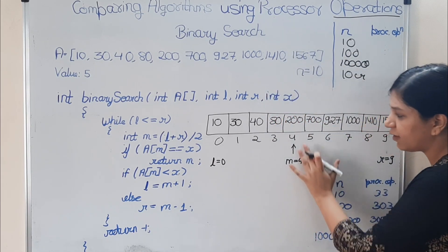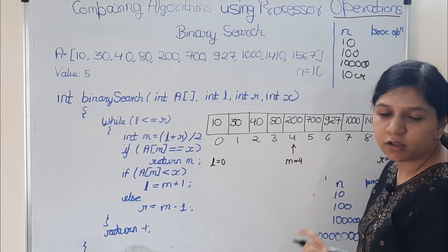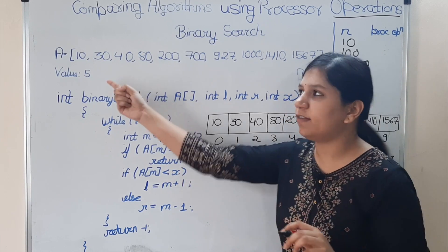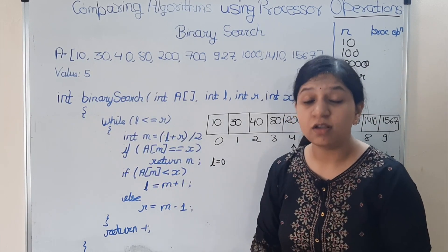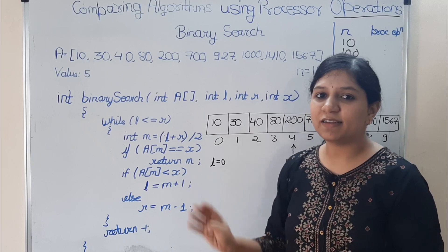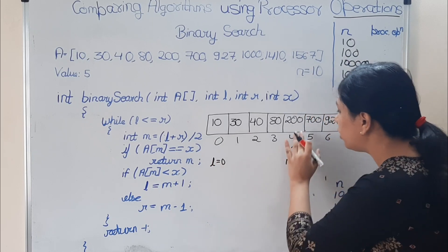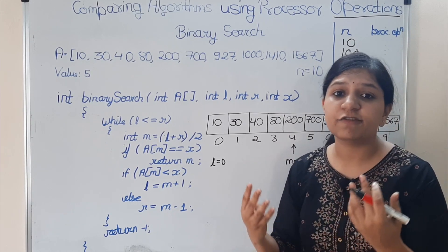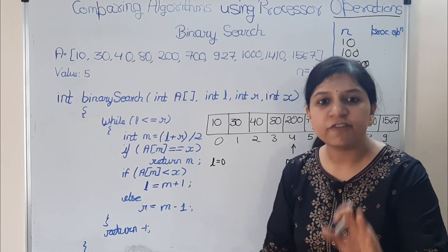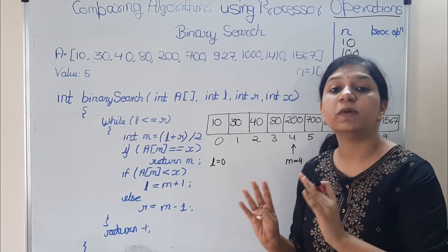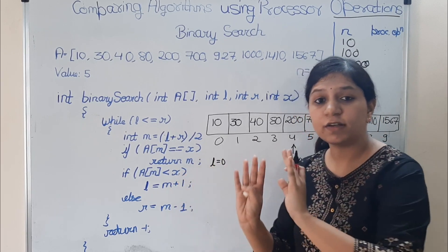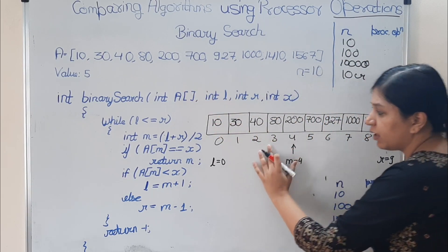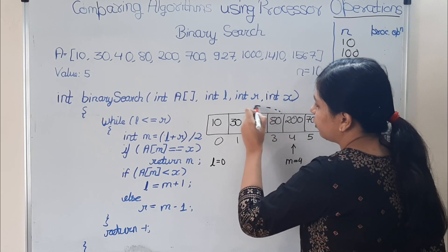We check what element is at index 4 — it is 200. We ask: is a[m] equal to x? x is 5, so they are not equal. Since this is a sorted array, all elements after 200 are greater than 200 and therefore greater than 5. So if 5 is present, it must be in the left part because it is less than 200.